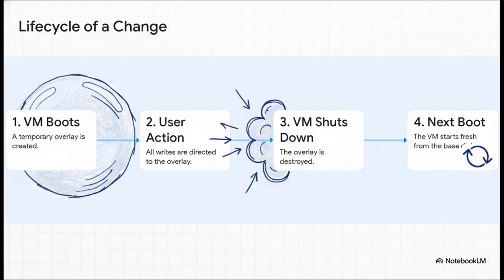So, the lifecycle is really just a simple four-step process. When the VM boots up, Proxmox creates that temporary overlay. As you're working, all the changes, all the writes, go there. Then, when you shut it down, that overlay gets completely destroyed. And the next time you boot, you're right back to a pristine copy of the original disk.